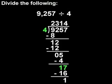And since there are no other digits to bring down, we say that we're left with a remainder of 1. So the quotient of 9,257 divided by 4 is 2,314, with a remainder of 1.